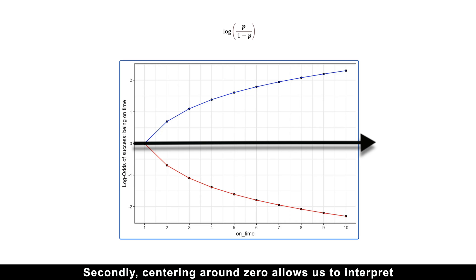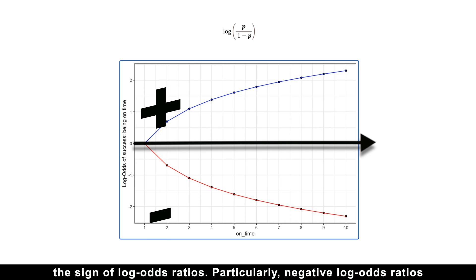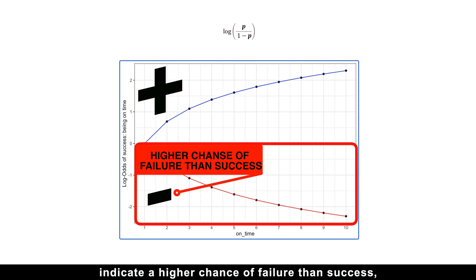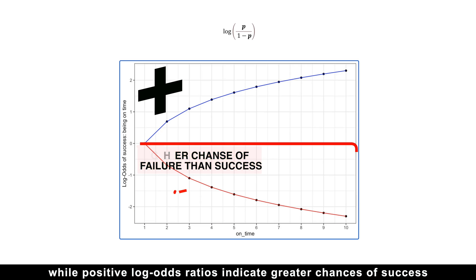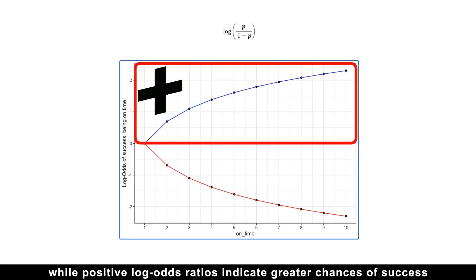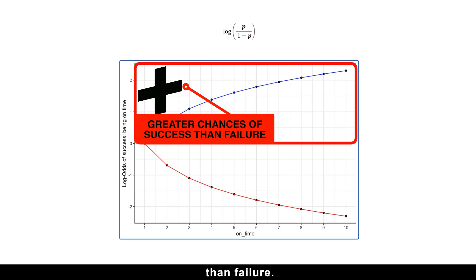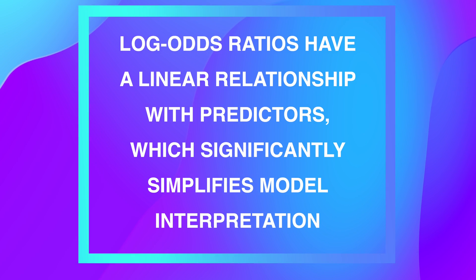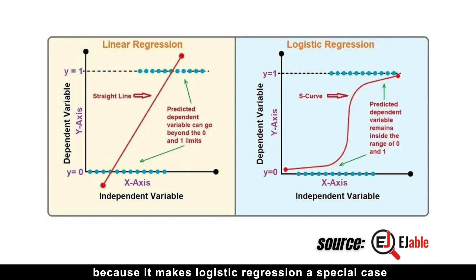Secondly, centering around zero allows us to interpret the sign of log odds ratios. Particularly, negative log odds ratios indicate a higher chance of failure than success, while positive log odds ratios indicate greater chances of success than failure. Finally, log odds ratios have a linear relationship with predictors, which significantly simplifies model interpretation because it makes logistic regression a special case of the usual linear regression.